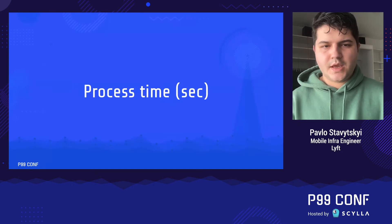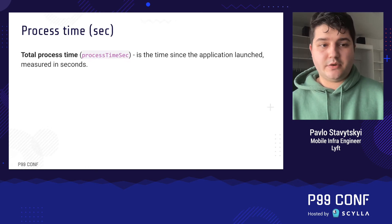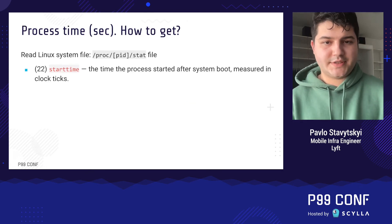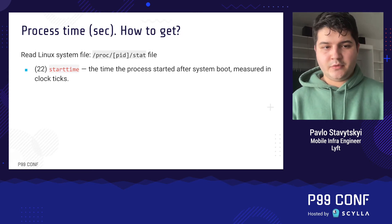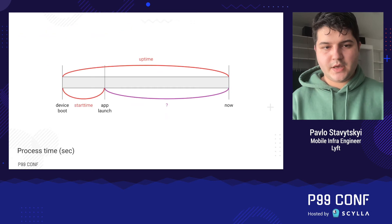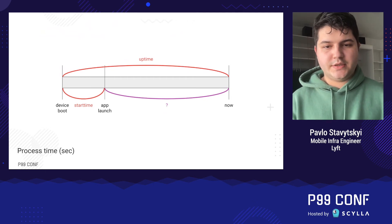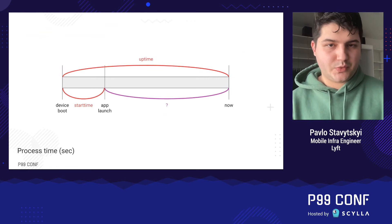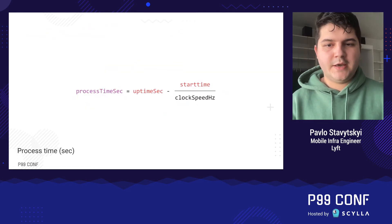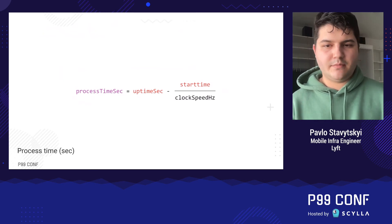The next value is process time — simply the time since the application launched, measured in seconds. To get it we refer again to the stat file, this time reading the starttime field, which is the time the process started after system boot, also measured in clock ticks. Visualizing it: starttime is the duration between device boot and app launch, but we need the duration from app launch to now. Since we already have uptime, we subtract starttime (converted to seconds by dividing by clock speed) from uptime.